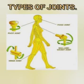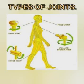Third type: hinge joints. Hinge joints are very similar to the hinges attached to doors. They allow extension and flexion in a particular plane. For example, the elbow joint. Hinge joints can move only in a fixed axis.